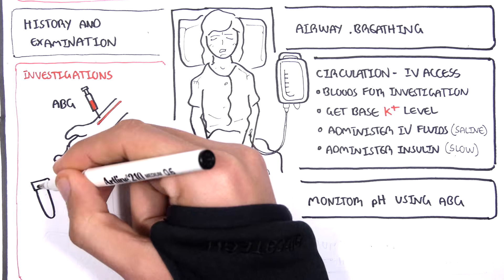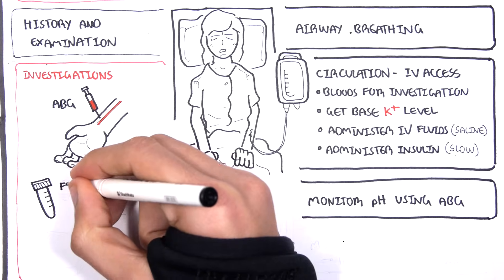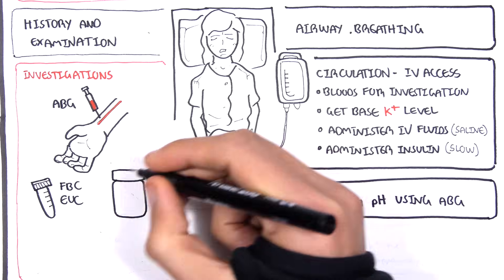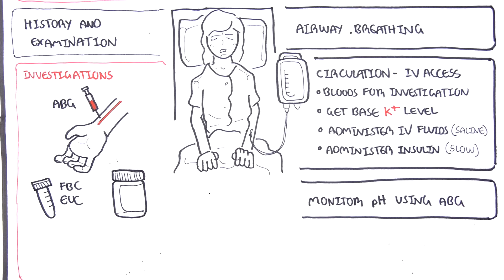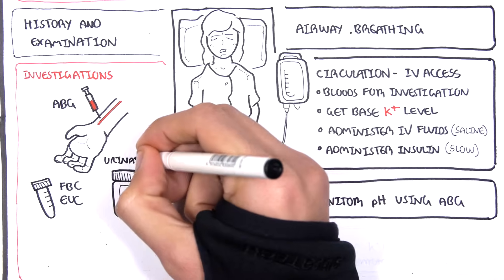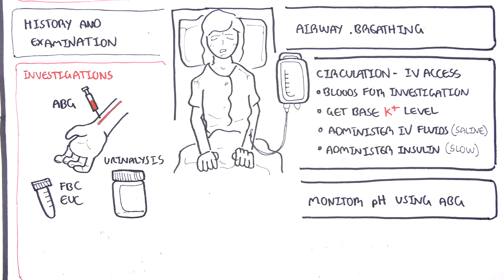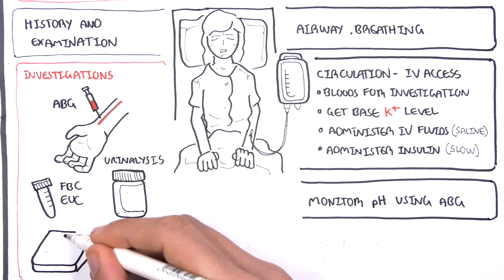Bloods, as we mentioned, full blood count, EUCs for infections and also electrolyte abnormalities and dehydration. Urine analysis is important to check and monitor if there's glucose, ketones, and infections.